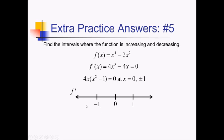I'm going to plug candidates from each interval into the factored version of f prime. Trying negative 2 to the far left: that's going to give us a negative out here and a positive inside the parentheses, so negative overall. Plugging in negative 1 half between negative 1 and 0: that's going to give us a negative out here and also a negative inside, so positive overall. Positive 1 half between 0 and 1: we get a positive and a negative, giving a negative overall. Something bigger than 1, like 2: positive times positive, which is positive.